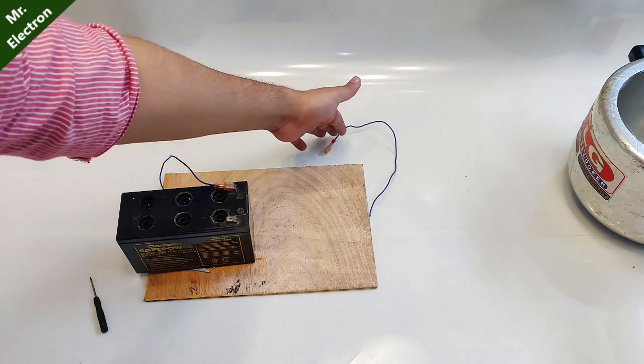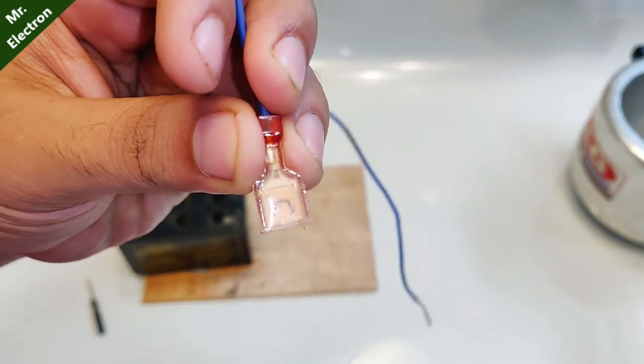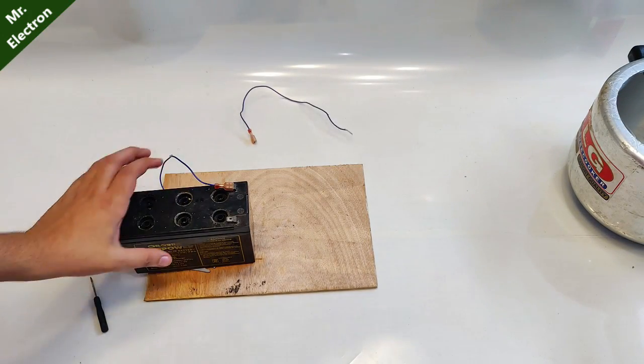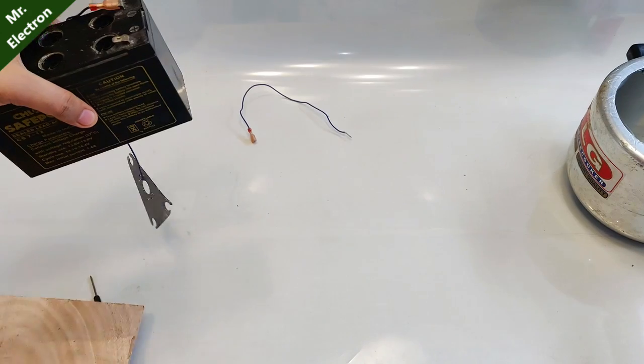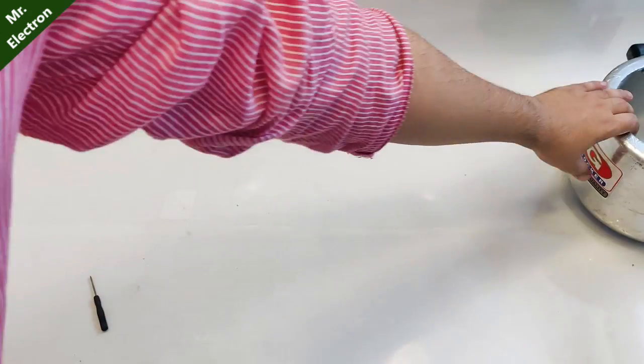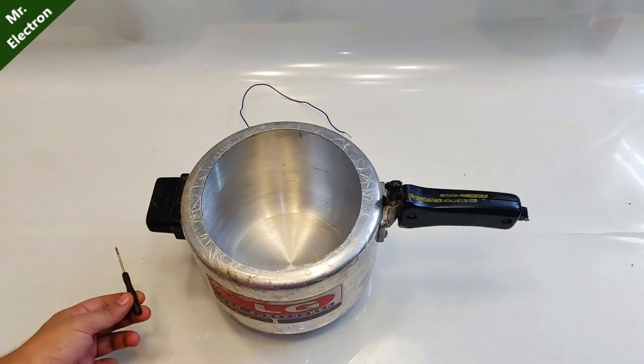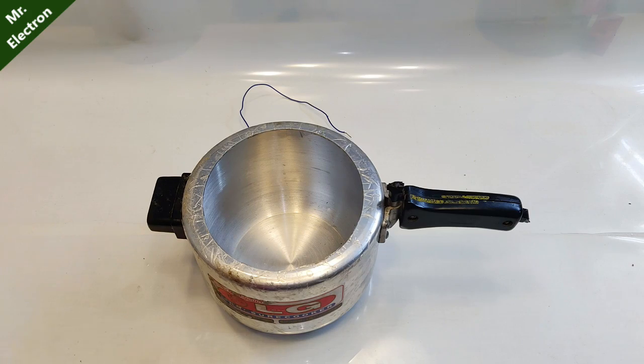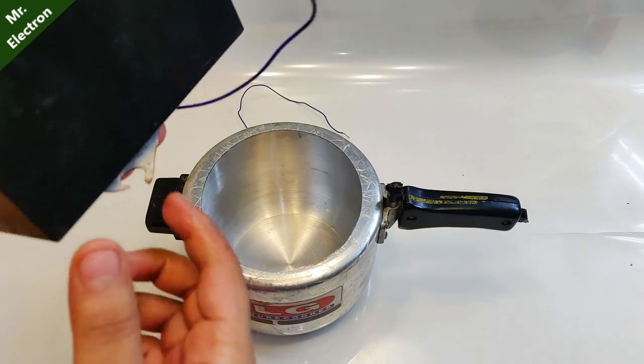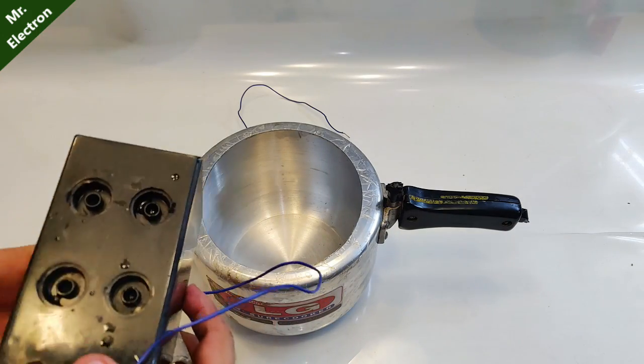After doing the connections you are going to need one more pin for the positive terminal, but we will connect that later. Let's remove the wooden board, not needed anymore. Now we need the pressure cooker itself. Place the metal sheet you see below it and keep the battery.